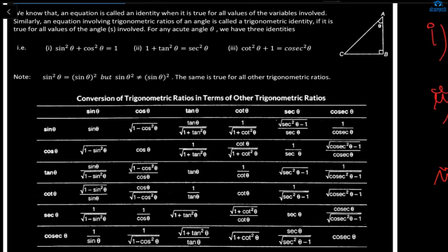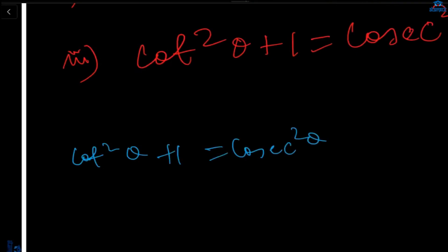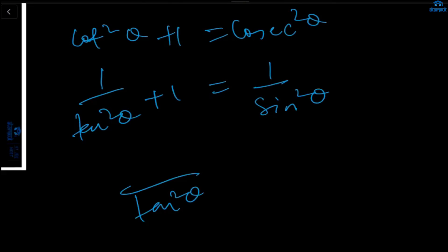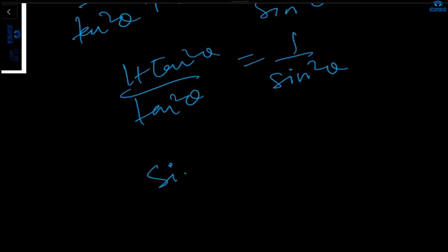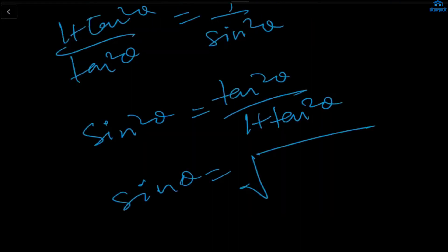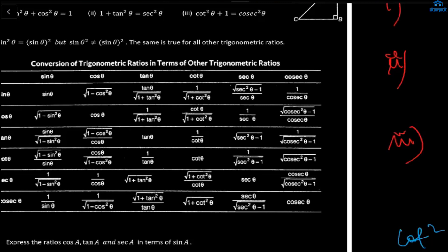To show how sinθ in terms of tanθ is derived: from cot²θ + 1 = cosec²θ, write cos as 1/tan²θ and cosec as 1/sin²θ. Taking LCM gives (1 + tan²θ)/tan²θ = 1/sin²θ. Taking reciprocal: sin²θ = tan²θ/(1 + tan²θ). So sinθ = √(tan²θ/(1 + tan²θ)) = tanθ/√(1 + tan²θ). The main formulas to remember are sin²θ + cos²θ = 1, 1 + tan²θ = sec²θ, and cot²θ + 1 = cosec²θ.